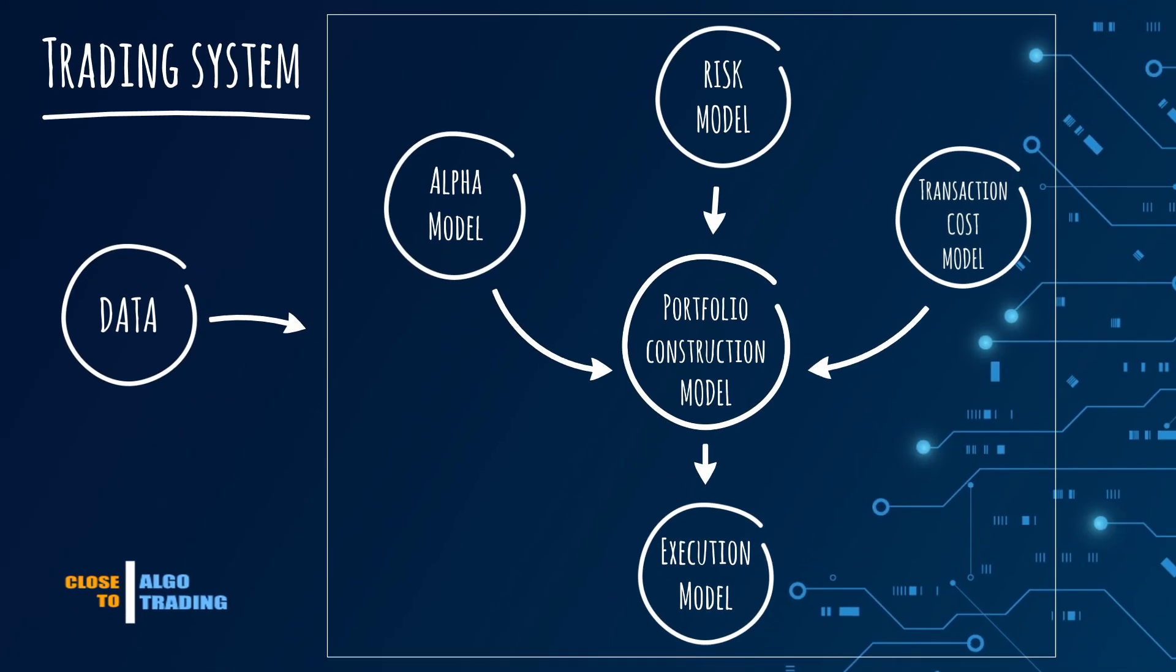Now, when we know what the data block is, let's have a look at the trading system elements and relationships between them. The arrows shown here represent an information flow. Here the alpha, risk and transaction cost models don't take any final decision. They only provide information to the portfolio construction model, which triggers the execution model.